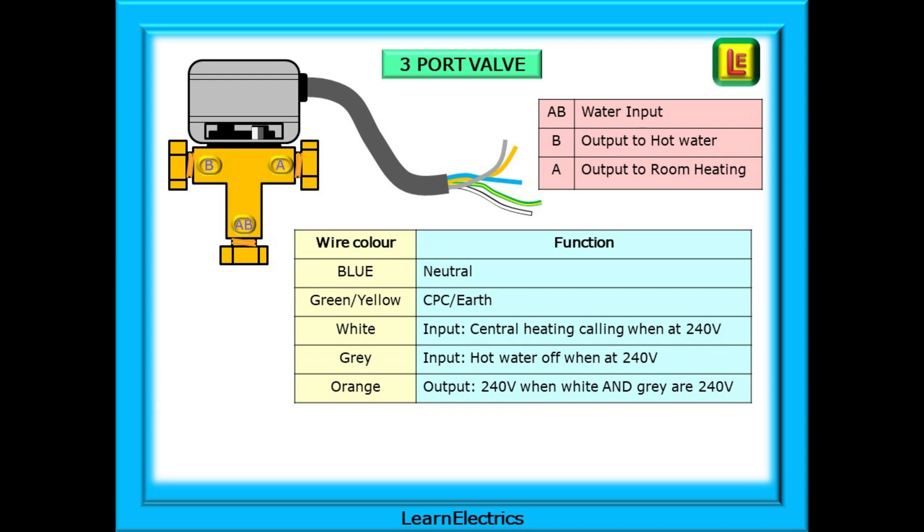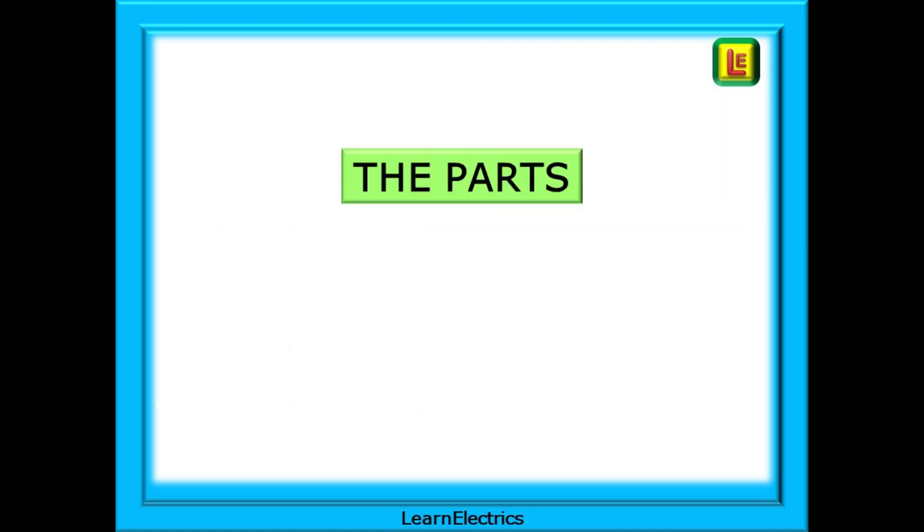The orange wire is an output. If the white wire input and the grey wire input are both at 240 volts at the same time, then the orange wire will output 240 volts. Let's take a simple look at how the various parts function. What do we expect them to do at different times? And we've already looked at the three port valve.